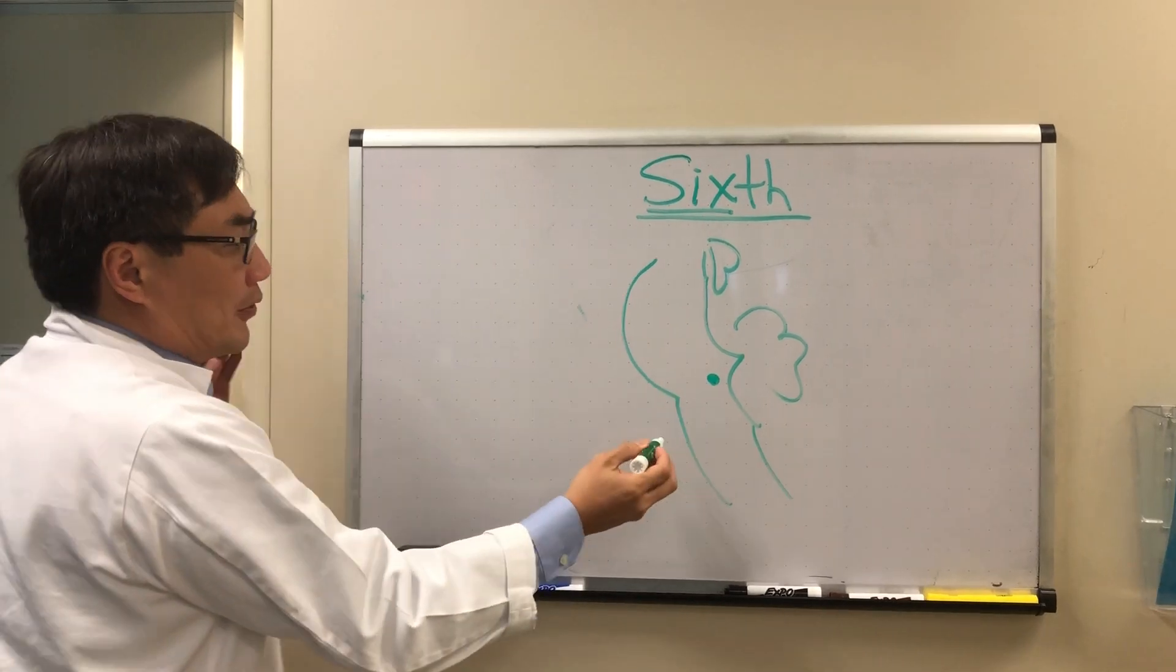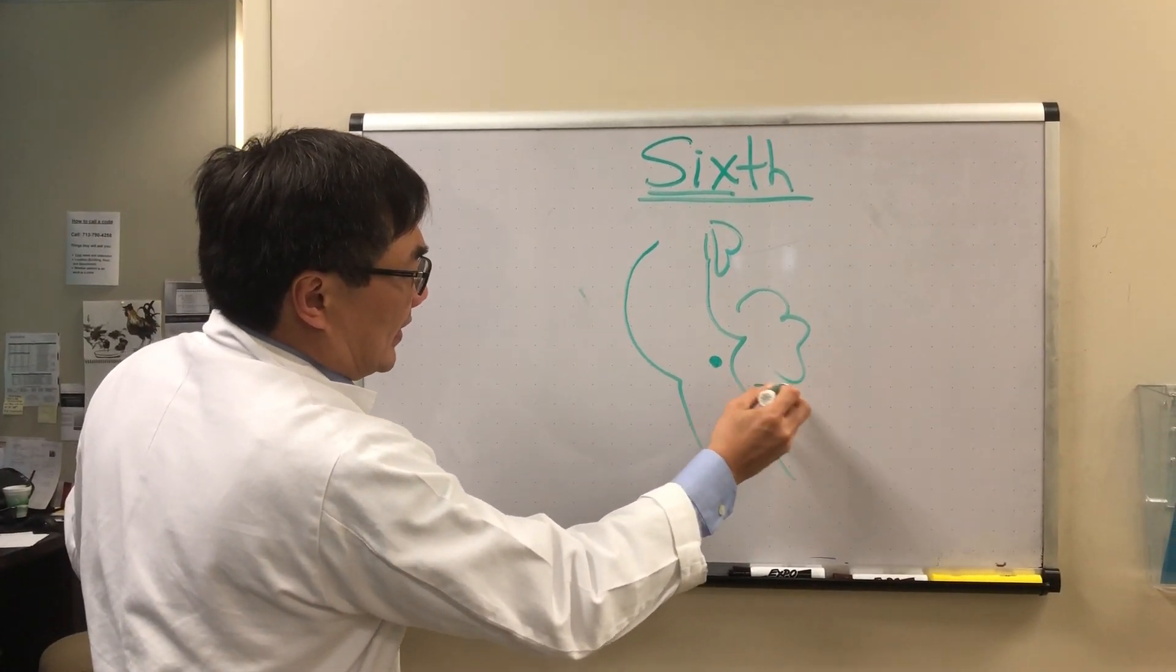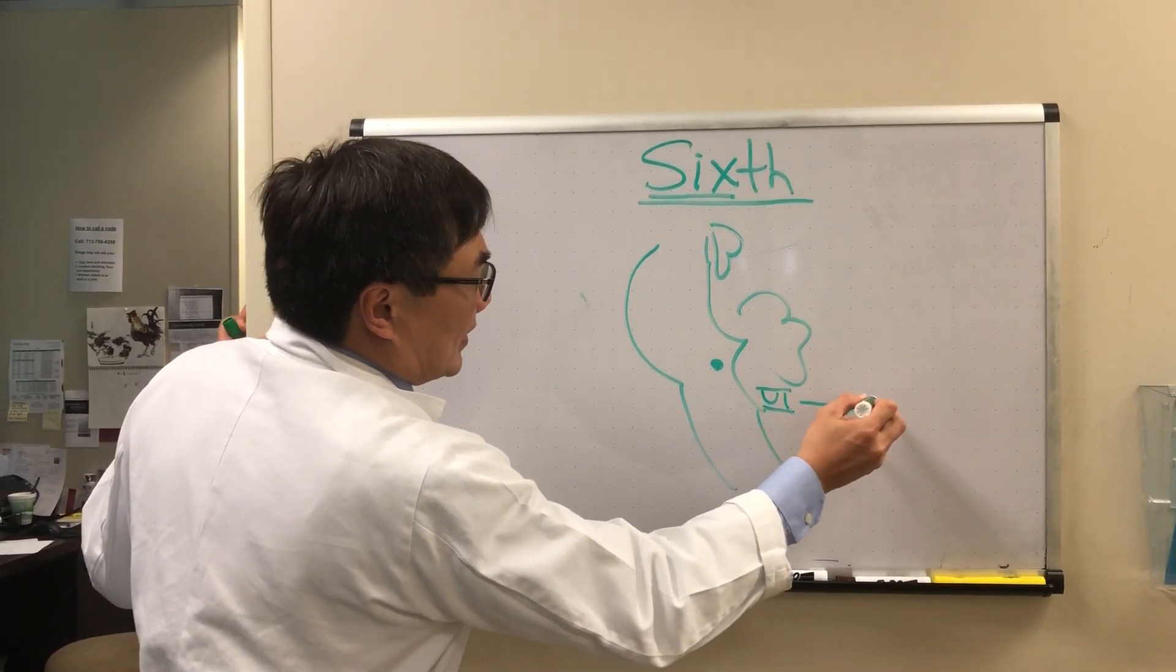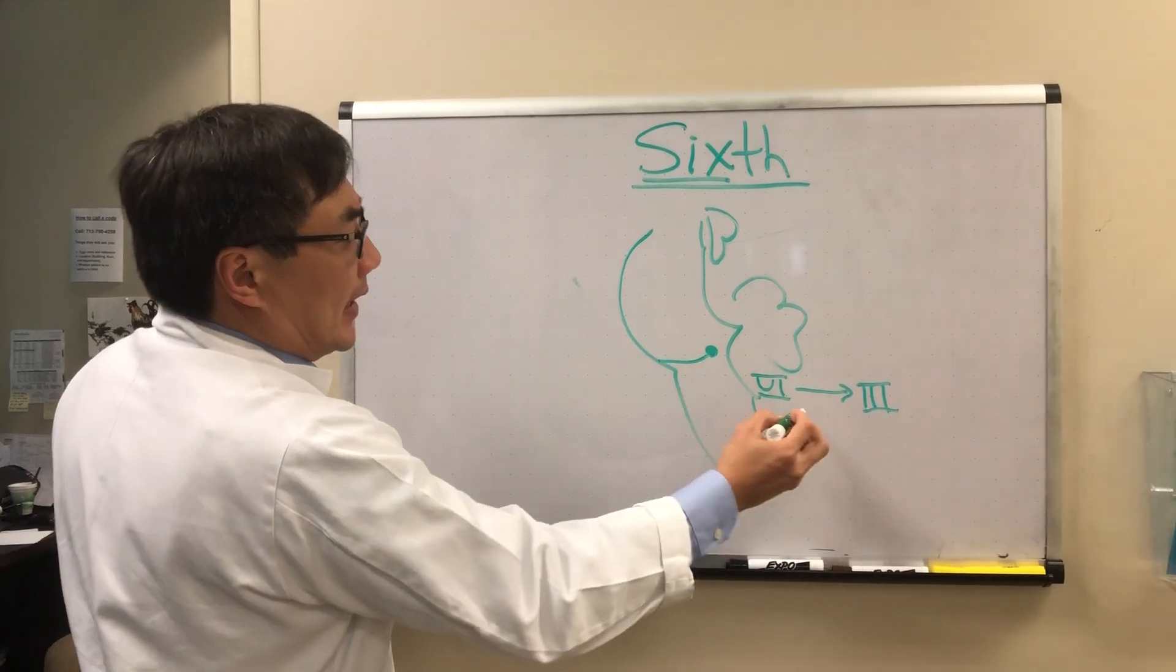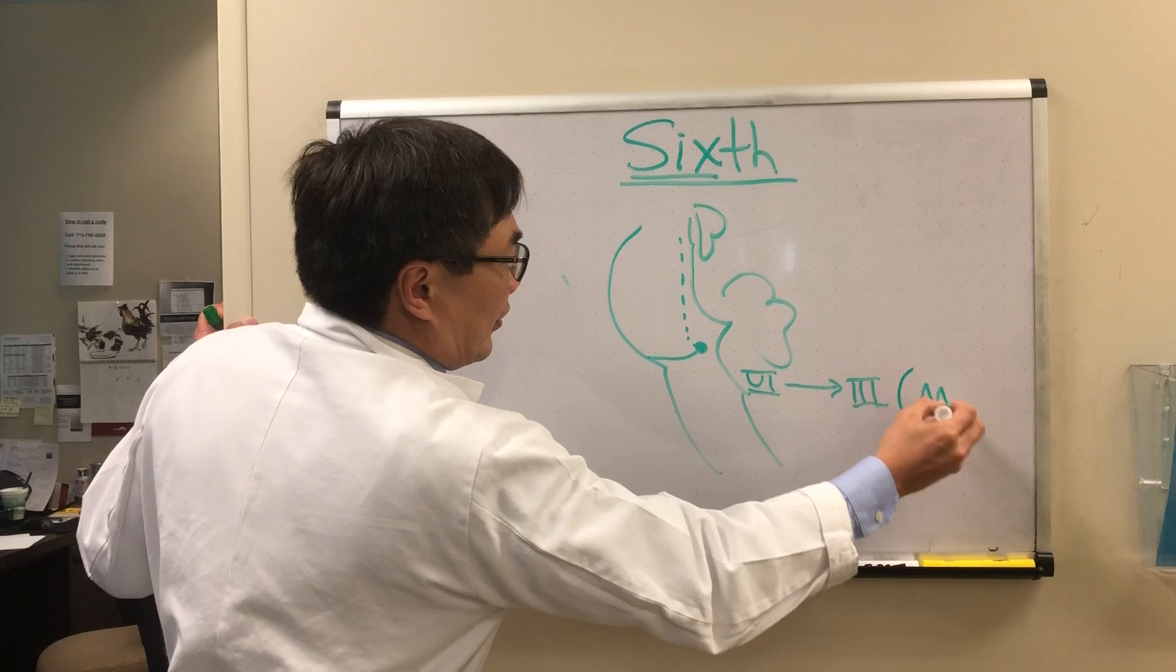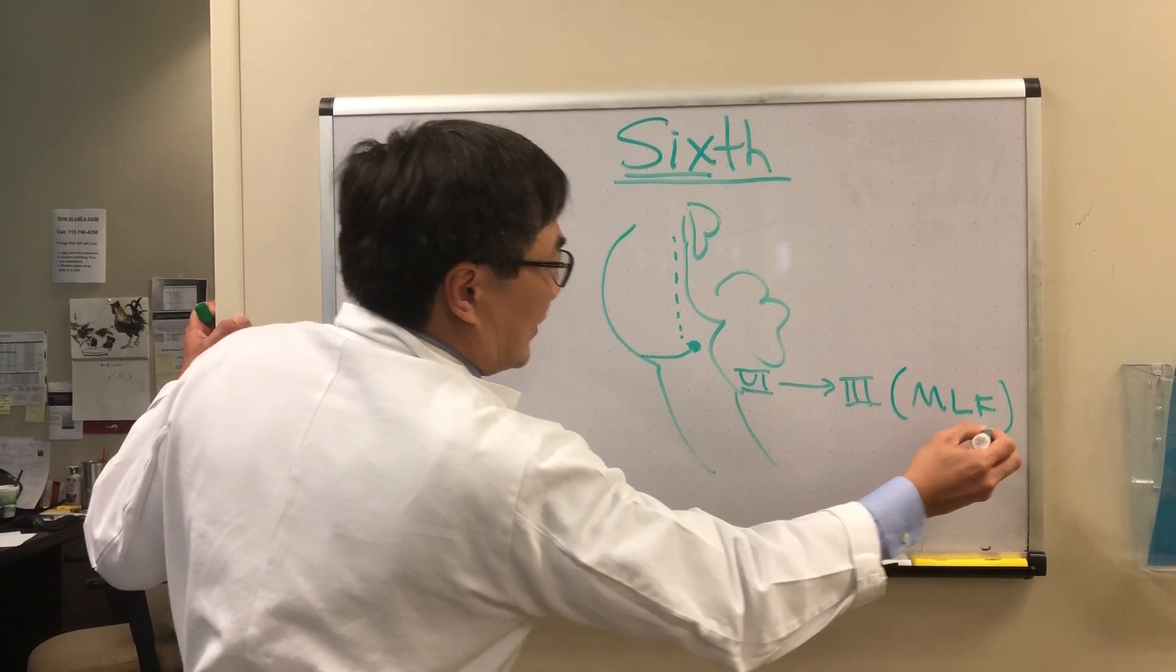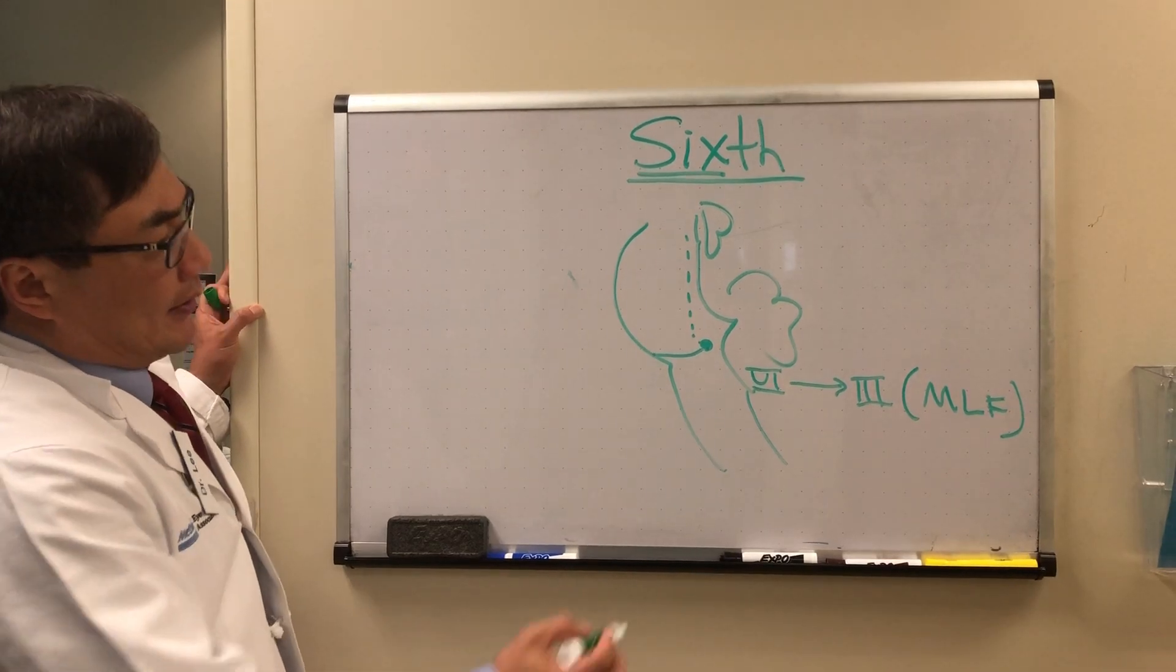at the caudal portion of the pons. The nucleus of six is interesting because it supplies both the sixth nerve itself as well as the connecting interneuron to the third nerve nucleus, specifically the medial rectus subnucleus, via the medial longitudinal fasciculus.